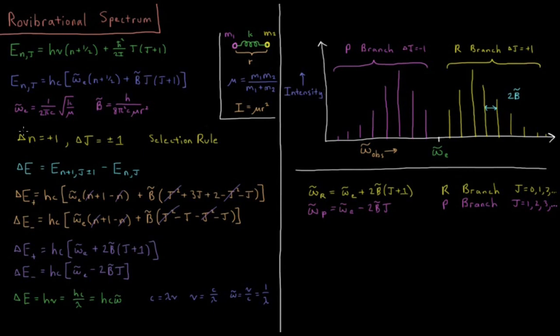Remember that our vibrational energy levels are much much bigger than our rotational energy levels. So this is always going to be a positive result. So delta E is going to equal E of n plus 1, j plus or minus 1, minus E_nj, accounting for these selection rules.